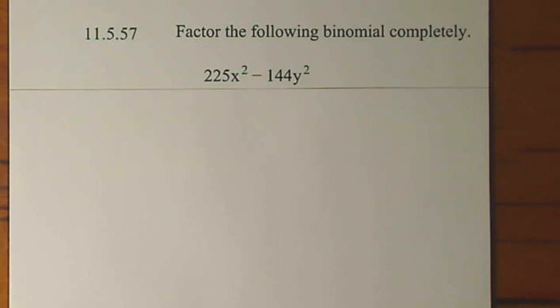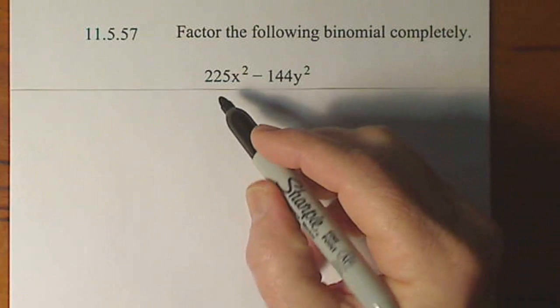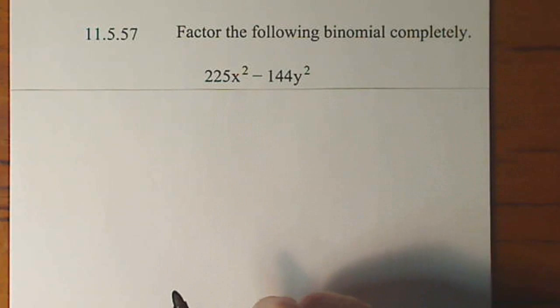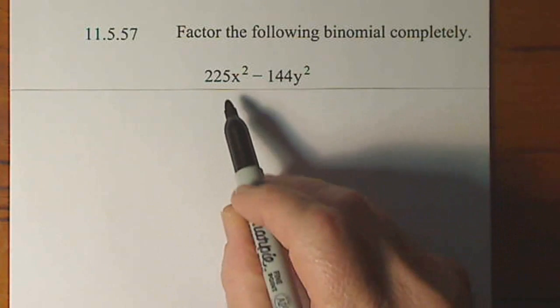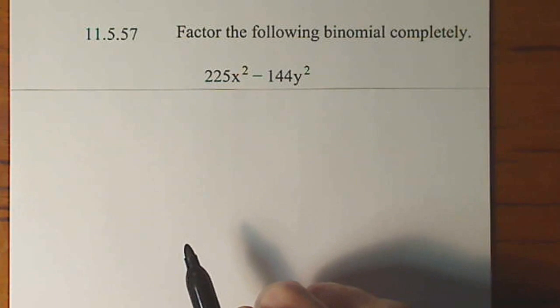I'll slide this out of the way. And it turns out that 225x squared, the square root of 225x squared is 15x.